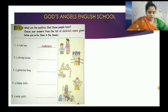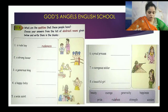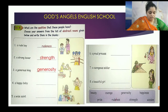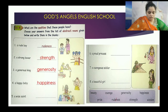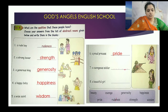See — a rude boy: rudeness. A boxer: strength. A generous king: generosity. A happy baby: happiness. A wise saint: wisdom. A proud princess: pride. A courageous soldier: courage. A beautiful girl: beauty.